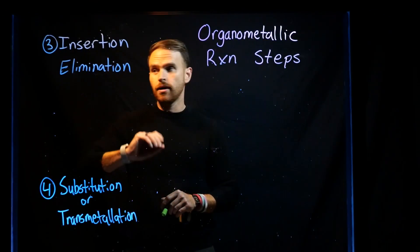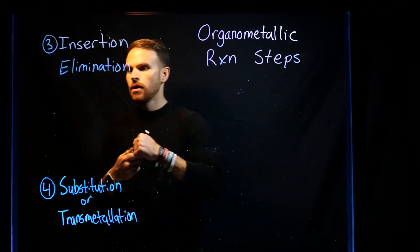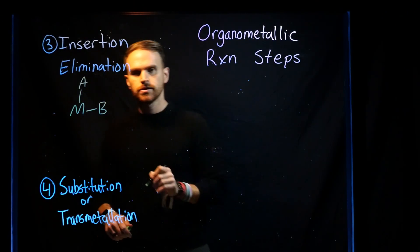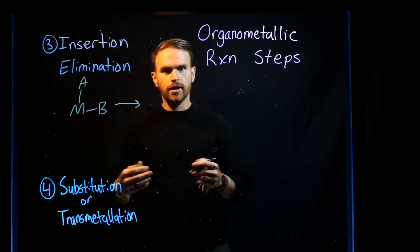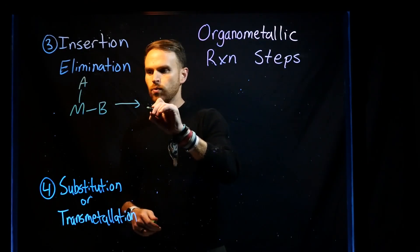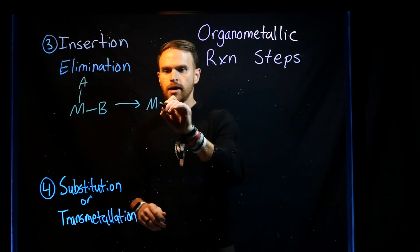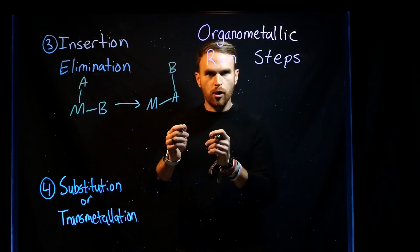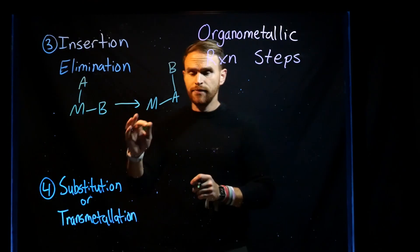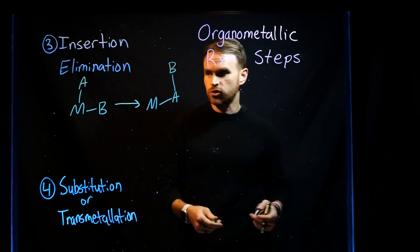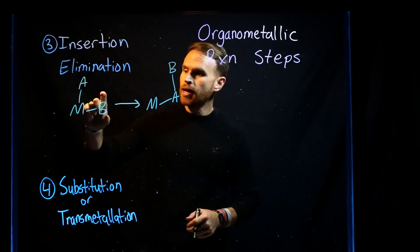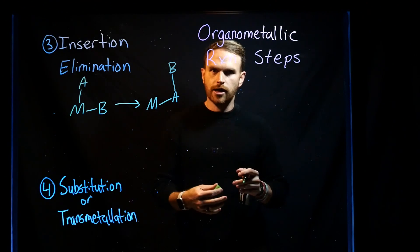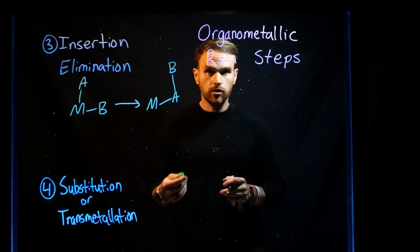The third reaction class is insertion and its microscopic reverse, elimination. With insertion, you have two types of ligands inserting into one another from the metal. A metal that has those two ligands subsequently becomes a species where both components have migrated into one another. You'll often hear this referred to as migratory insertion, because one of the ligands is migrating over to be attached to the other. A common example is similar to hydride shifts, alkyl shifts, or aryl shifts from organic chemistry.